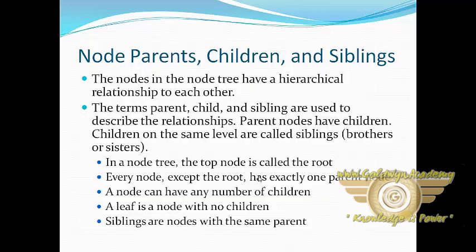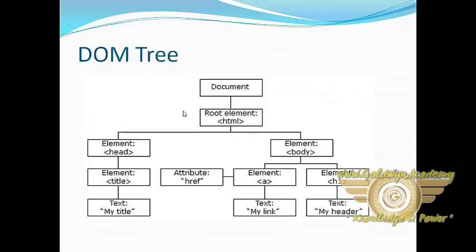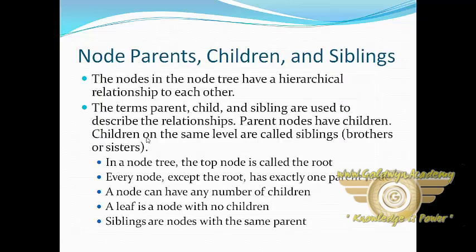Now let's discuss node parents, children, and siblings. The nodes in the node tree have a hierarchical relationship to each other. The terms parent, child, and siblings are used to describe the relationship. A parent node has children — for example, the HTML root element has two children: head and body. Children on the same level are called siblings, brothers or sisters.